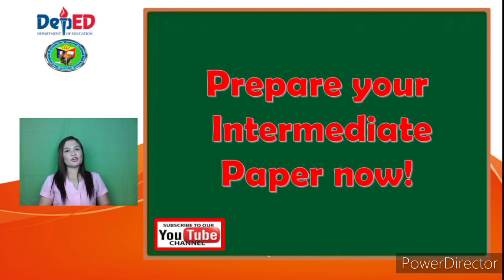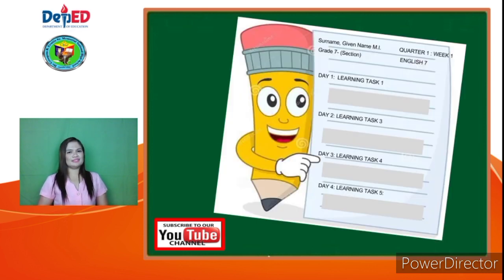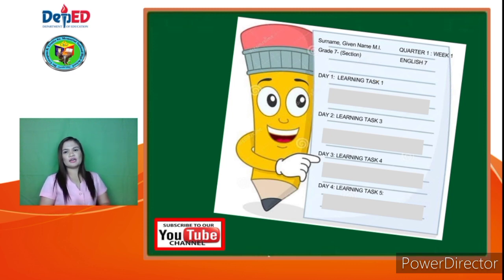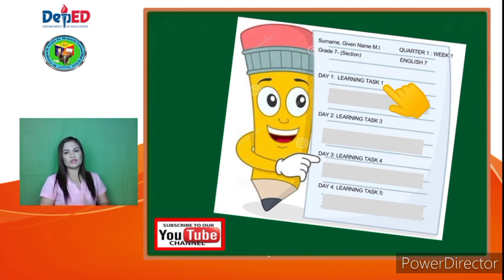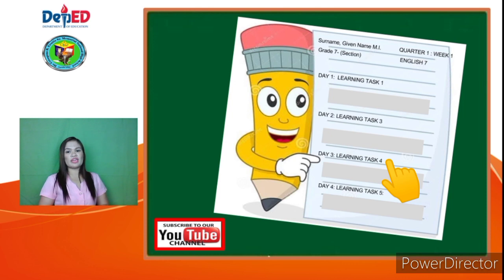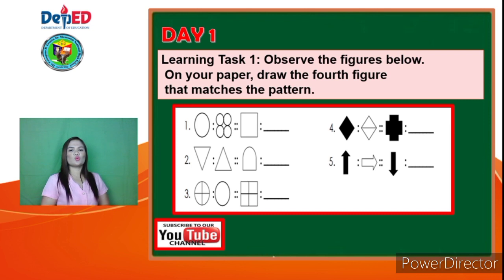Now you are ready to complete your output for this week. You're going to prepare your intermediate paper. Write your surname, given name, middle initial, grading section, Quarter 1, Week 1, and of course the subject is English 7. You're going to accomplish Day 1 Learning Task 1, Day 2 Learning Task 3, Day 3 Learning Task 4, and Day 4 Learning Task 5.